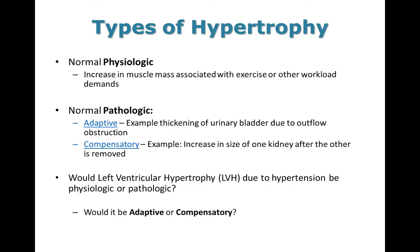Hypertrophy may be considered physiologic or pathologic. Physiologic hypertrophy is an expected physiologic process that happens in response to exercise or other workload demands — bodybuilding is a good example. Other forms of hypertrophy happen because of disease conditions and these are considered pathologic. For example, if somebody has to constantly strain during urination to force urine through a partially blocked urethra, over time the urinary bladder wall will thicken as those muscles are placed under more demand.